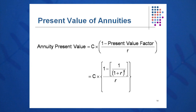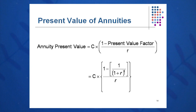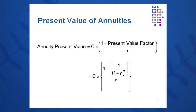An annuity is a series of constant level cash flows occurring at the end of each period for some fixed number of periods. Home mortgages, car loans, rent, and so on might be considered an annuity. The present value of an annuity, PVA, equals C times [1 minus 1 over (1 plus R) to the T], all divided by R. This equation gives us a reduced format with less chance of making errors, especially over many years, to calculate the present value of the annuity at a certain rate for a certain time. We can also solve for R and T if needed.